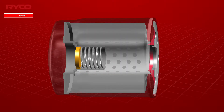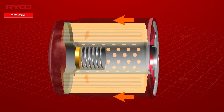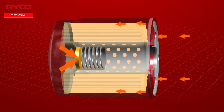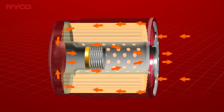A safety or bypass valve will prevent excess pressure from building up in the filter due to media blockage or high viscosity oil flow on extremely cold starts. The valve opens at a predetermined pressure, which is dictated by its compression spring. The size of the valve must also ensure adequate oil flow during operation. This allows oil to bypass the media and flow directly to the engine components, even though the oil is not being filtered, it's still being circulated.